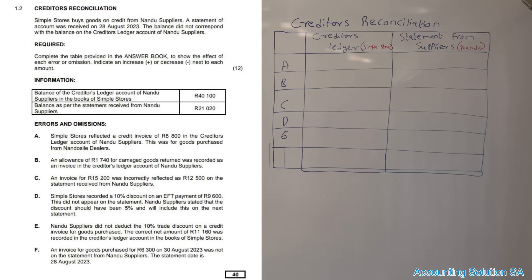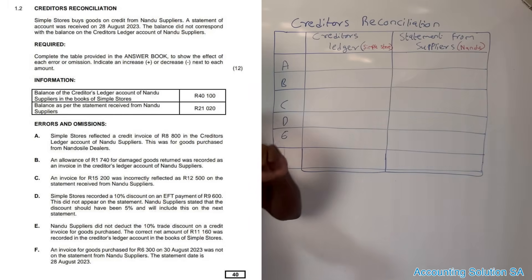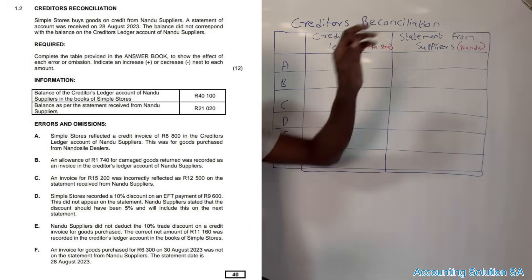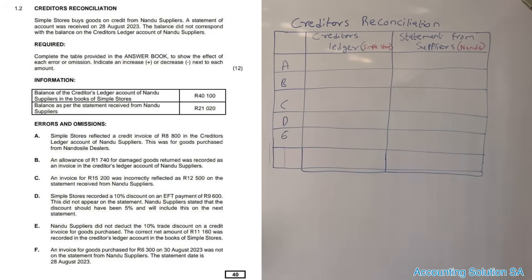Creditors reconciliation 1.2: Simple Store buys goods on credit from Nardu Supplier. A statement of account was received on 28 August and the balance did not correspond with the balance of the creditors ledger account of Nardu Supplier. Our business is Simple Store and our supplier for today is Nardu. If we find any other supplier included, we must cancel it — we must do it separately, not on this one.